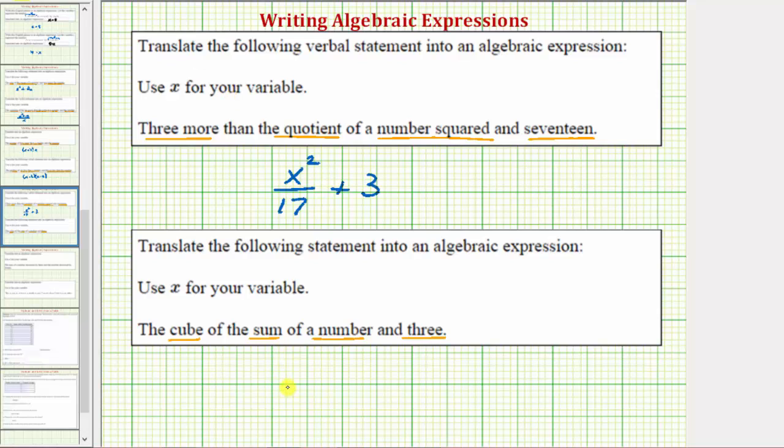So again we have the cube of a sum. So we'd have the sum raised to the third power. And the sum is of a number and three. Where the number is represented by the variable x. So in the parenthesis we have x plus three. So this expression is the cube of the sum of a number and three.